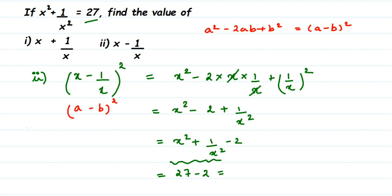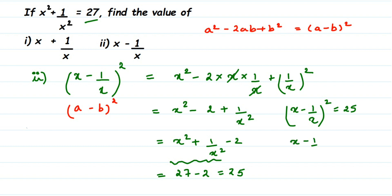So (x - 1/x)² = 25. Taking a square root on both sides to remove the square, we get x - 1/x = √25 = 5. Unlike the first question where we couldn't simplify the square root, here √25 = 5. So the answer is x - 1/x = 5. I hope this is clear — drop a comment if you have any questions. Thank you for watching!